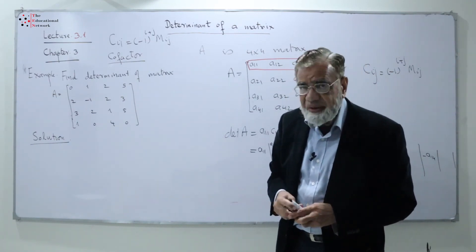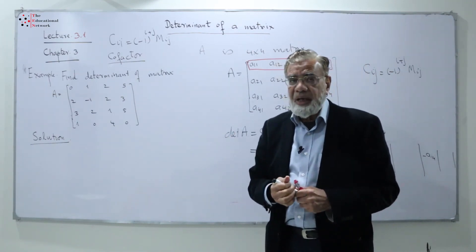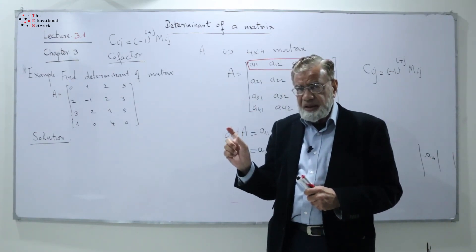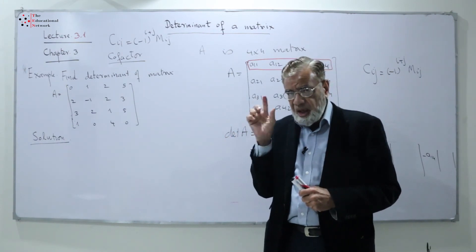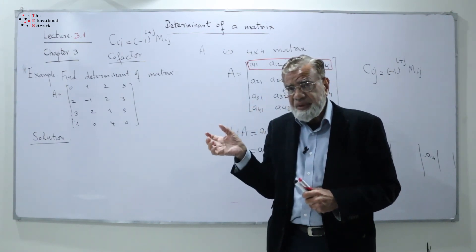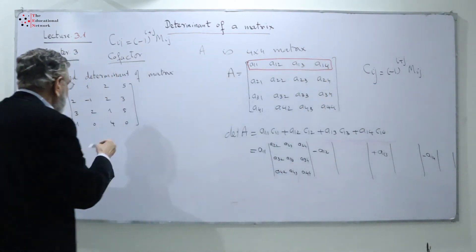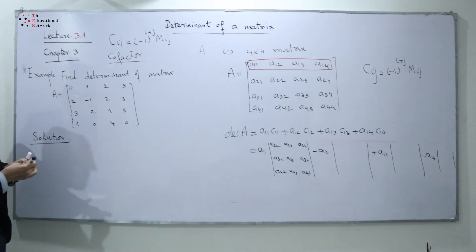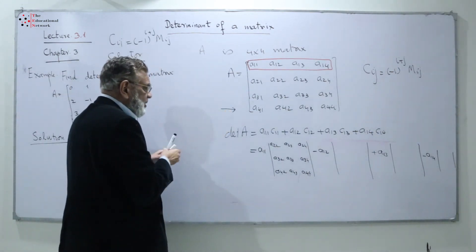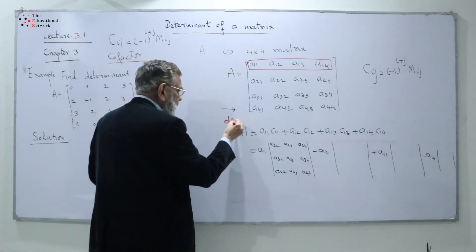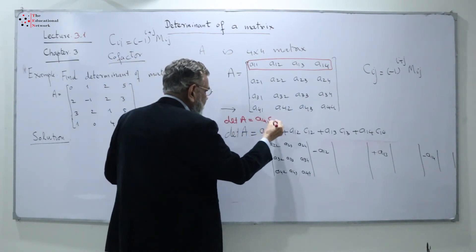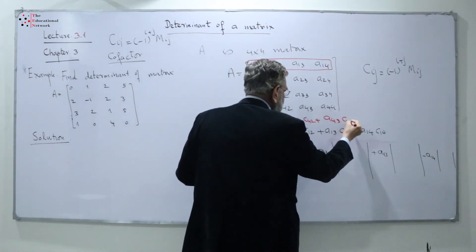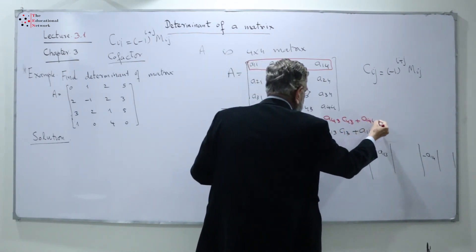Now let's solve the 4x4 example. When you look at the matrix, notice that the last row contains two zeros. So we open the determinant along the last row: det(A) = A41·C41 + A42·C42 + A43·C43 + A44·C44.